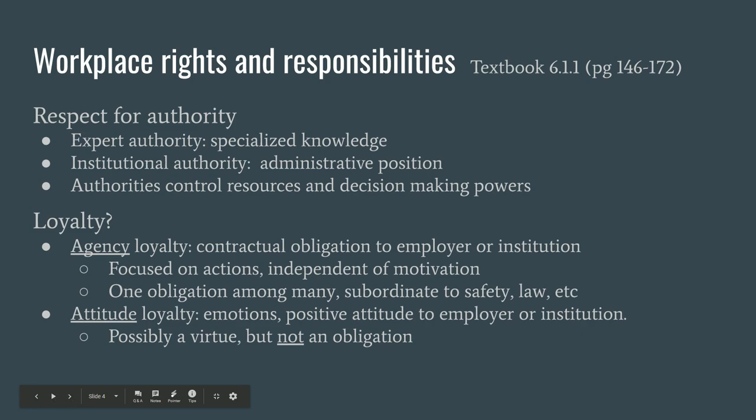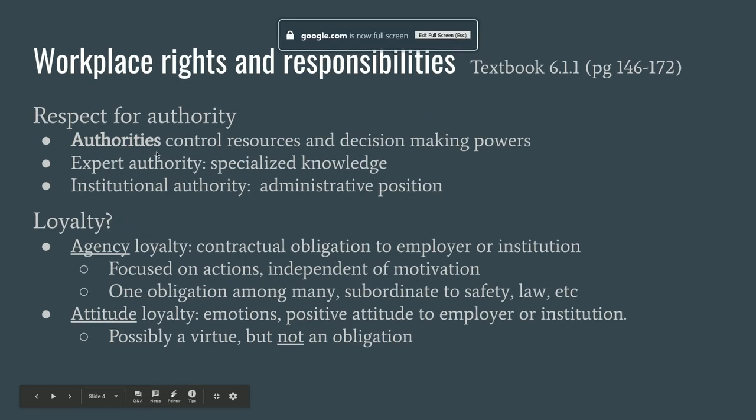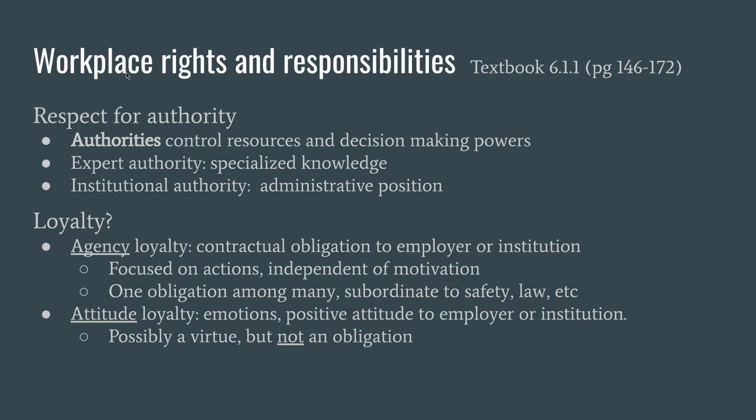Here's something even trickier: respect for authority. The book defines authority as people who control resources or decision-making powers — not necessarily legal authority like police, but anyone in a position to make exclusive decisions. The book distinguishes between two important kinds of authority. One is expert authority: authority granted to people with specialized technical knowledge or particular experience, like an eyewitness. This kind of expertise gives people authority in conversations and decision-making processes, as we saw with the Challenger explosion, where management lacked the engineering knowledge to fully understand the risks.